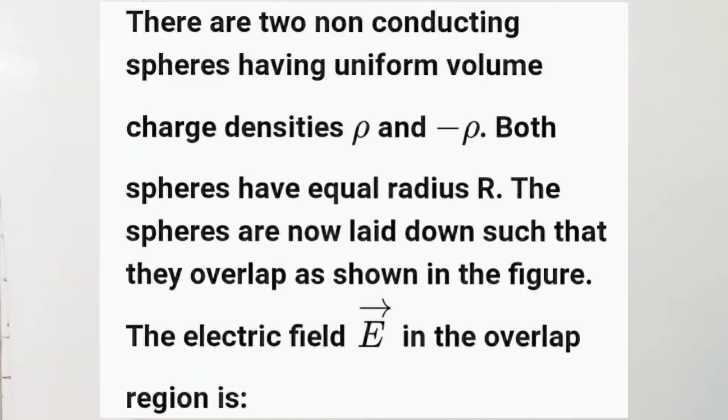The figure shows two spheres uniformly charged with volume charge density rho and minus rho respectively. The centers are at separation a and the overlapping region is free of charge. Find the electric field strength at a general point P inside the overlapping region.